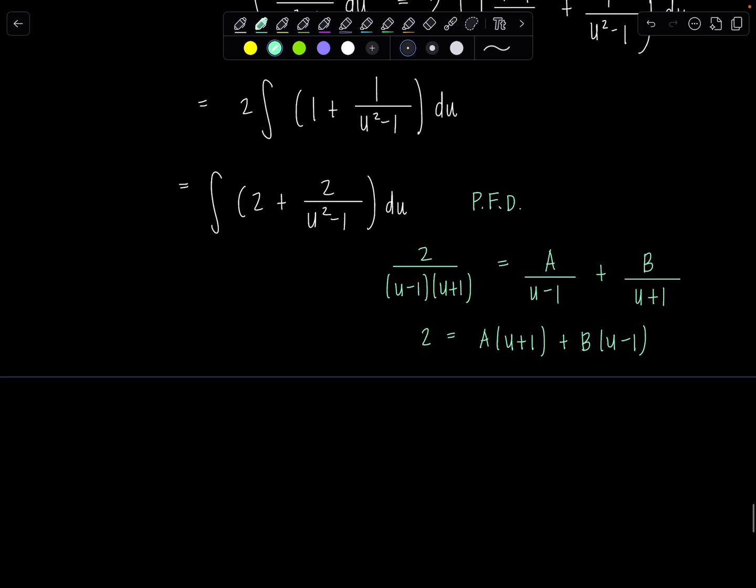And then multiply through by the LCD, we'll have 2 equals A times u plus 1 plus B times u minus 1. And then to solve for the constants, I'm just going to let u be negative 1 first. Then 2 equals A times 0 plus B times negative 2. So that means B is negative 1. And then if u is 1, 2 equals 2A plus 0. So A is 1. That's why I multiplied through by the 2. Otherwise, those would be a negative 1 half and a positive 1 half, which is not the end of the world. But doesn't this just look nicer?